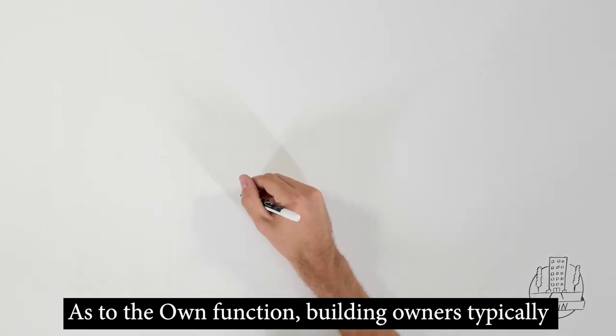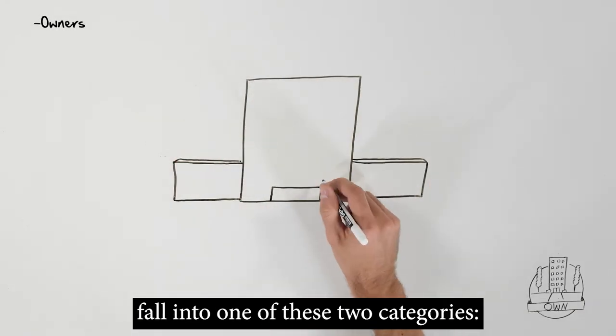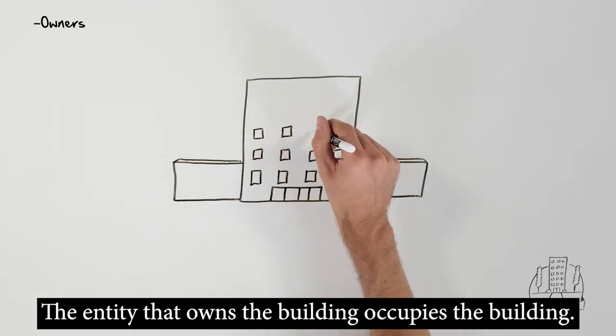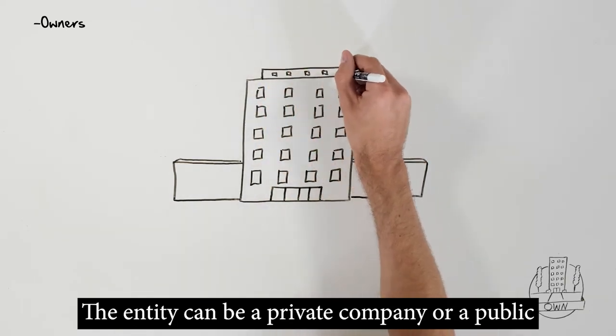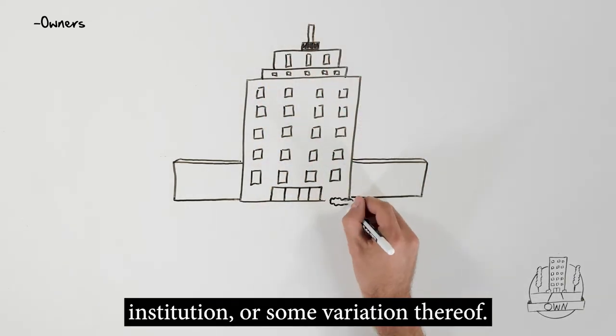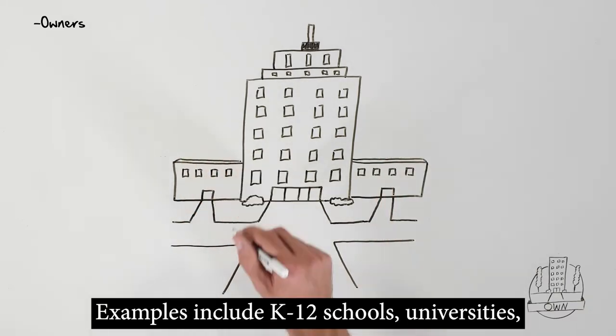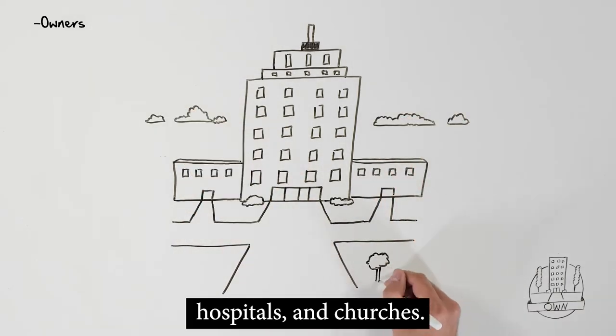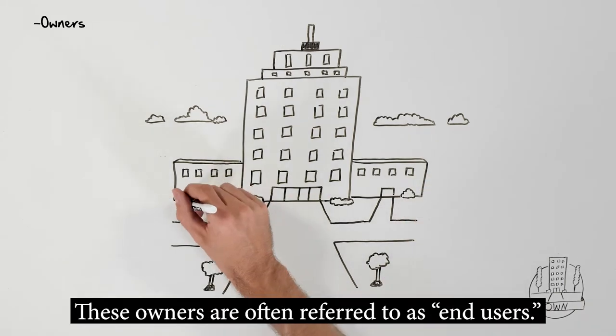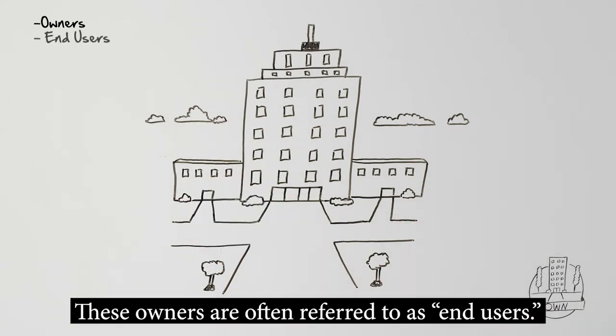As to the own function, building owners typically fall into one of these two categories. The entity that owns the building occupies the building, whether that's a private company or a public institution or some variation thereof. Examples include K through 12 schools, universities, hospitals, and churches. These owners are often referred to as end users.